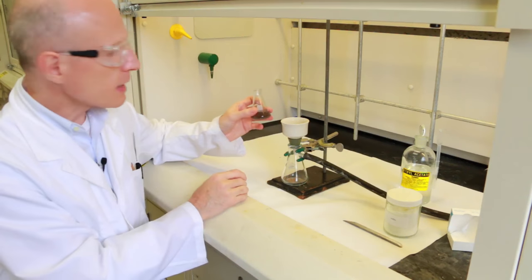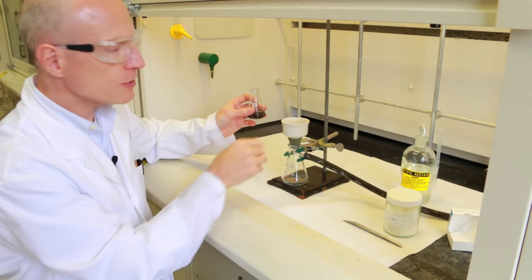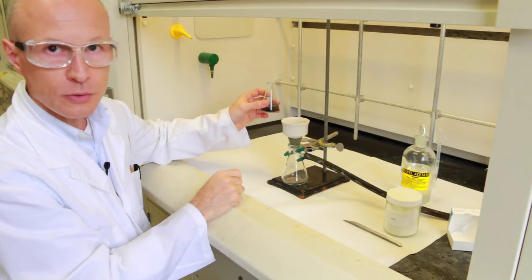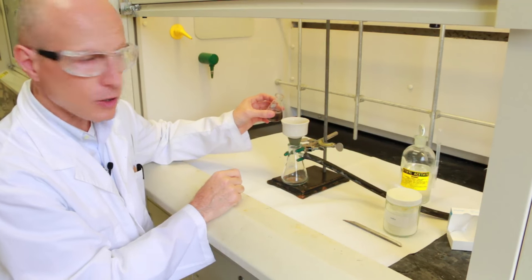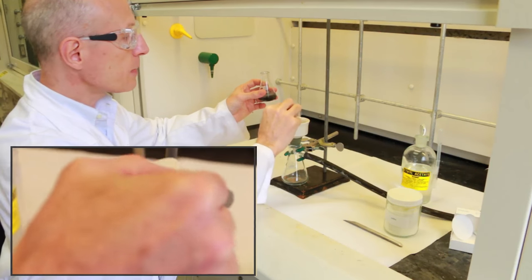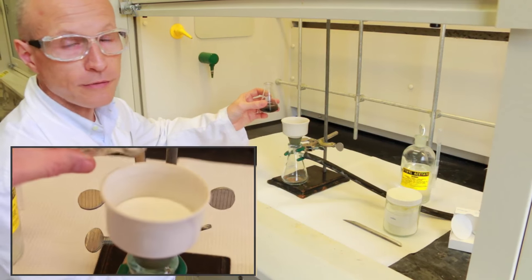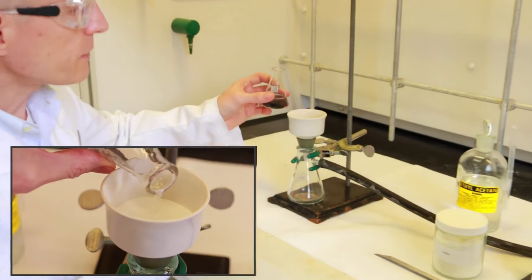When you filter through celite, it's very important not to disturb the surface of the celite, so you don't want to dig divots while you are pouring your solution. You can either pour very carefully and slowly, or you can add a second piece of filter paper on top so it will break the fall and you won't dig divots into the surface of the celite.